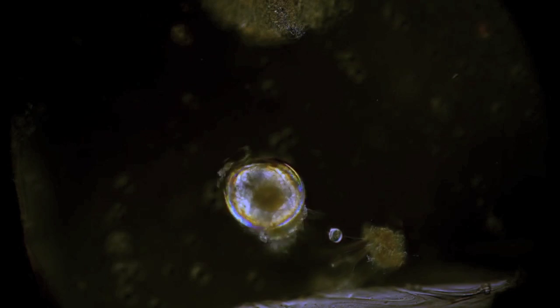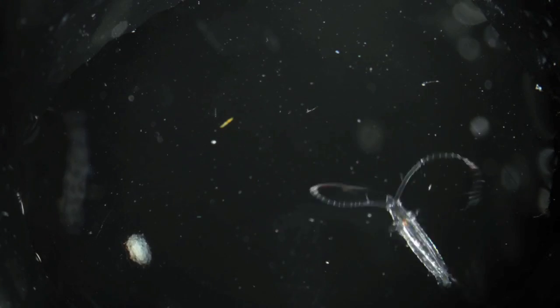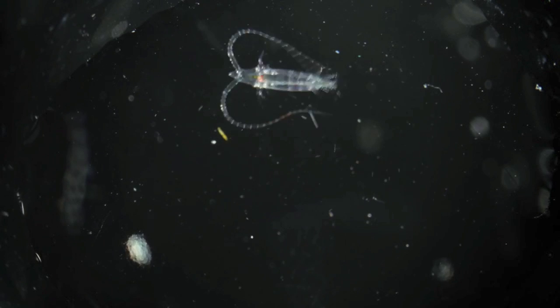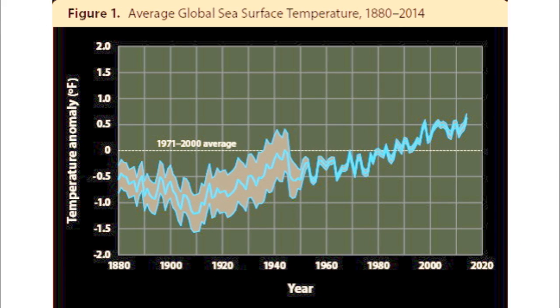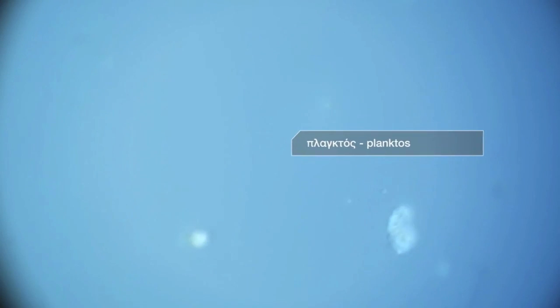Sea surface temperature is expected to increase two degrees Celsius on average globally in the next 20 years. Some of the consequences of this increase include changes in ocean circulation and higher water column stratification, thus affecting the nutrient availability for the growth of marine phytoplankton.